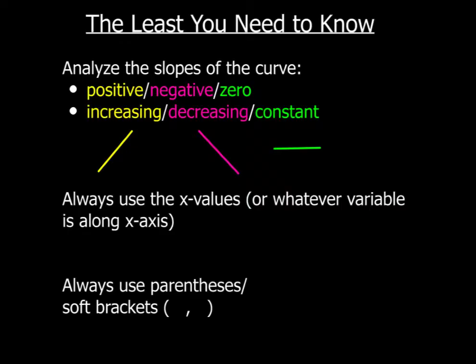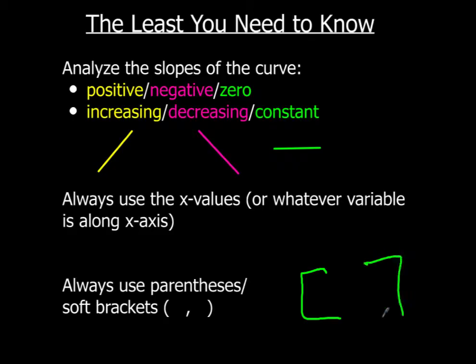You will always use the x-values. Sometimes they'll be t, because in some graphs you'll be analyzing time along the horizontal axis, but generally whatever's along the horizontal axis is what you're going to use. And you will always use soft brackets — parentheses. You will never use hard brackets, because that is not what we use when we're talking about increasing, decreasing, and constant.